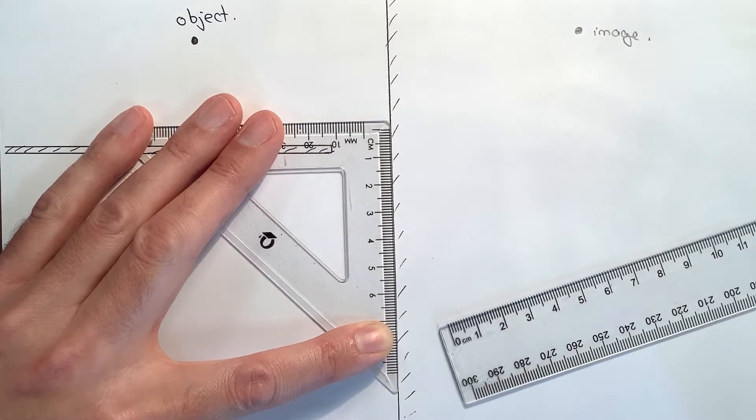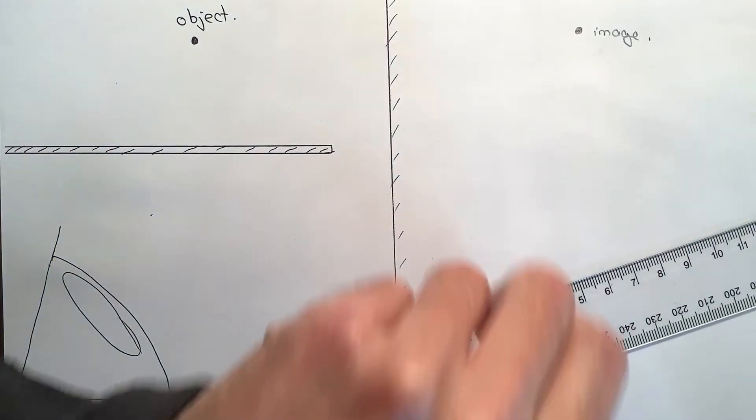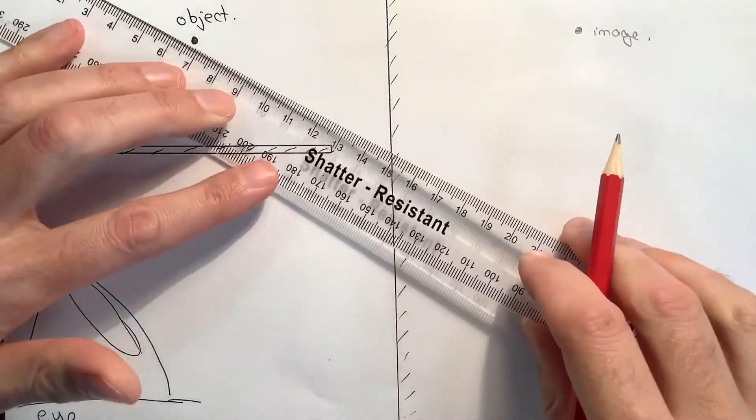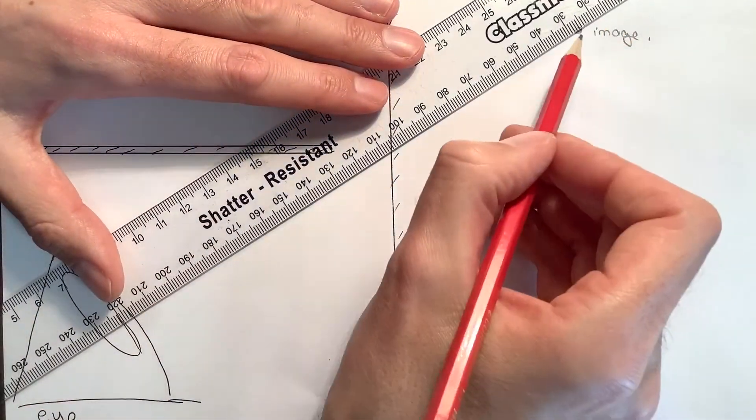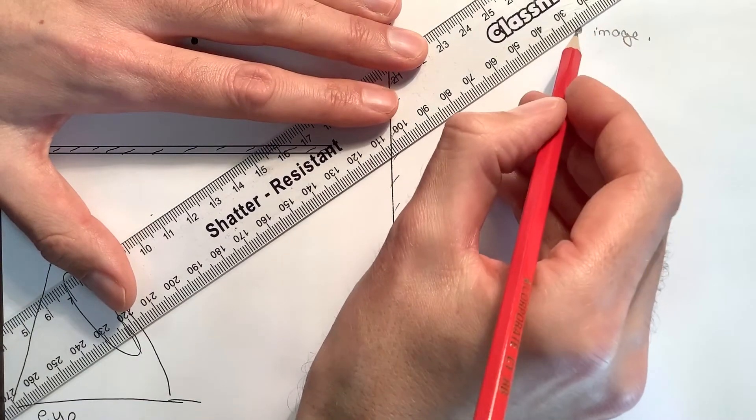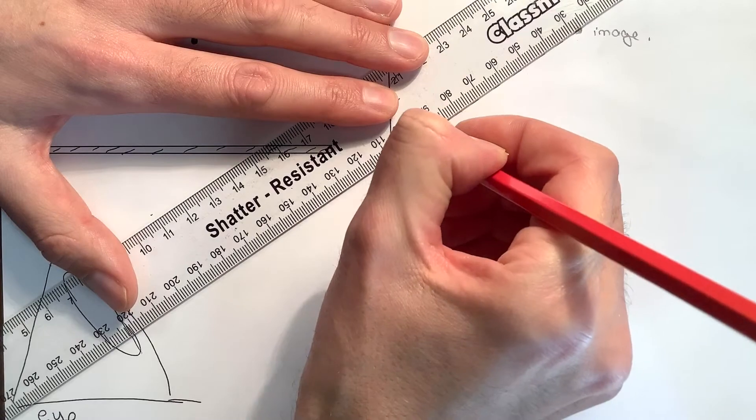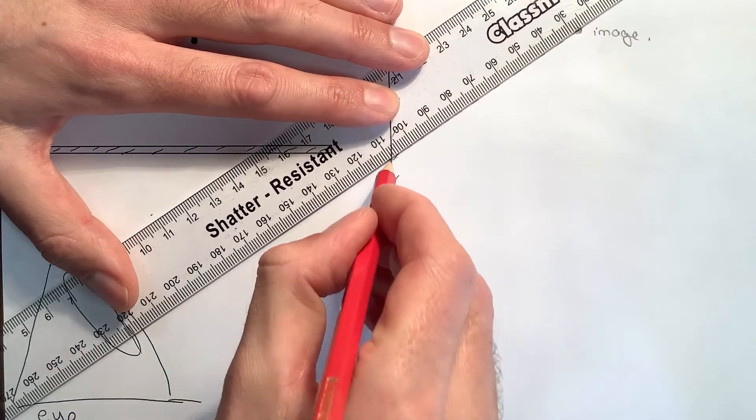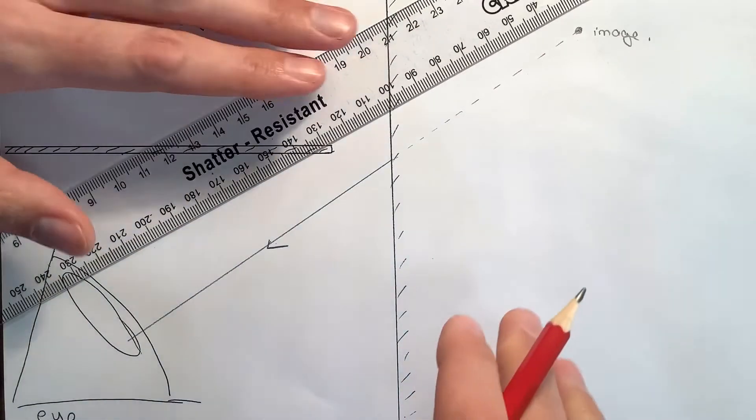So what I can do then is I've cheated—I know where the image forms. Now I'm going to take the set square away and draw a ray that starts off as a virtual ray from where I know the image has formed. Then when I get to the mirror, I'm going to change that into a real reflected ray going into the eye.